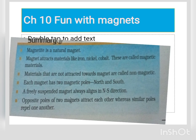You can try an experiment: take a paper, put a coin on it, and move a magnet from the bottom. The coin will move in the direction of the magnet — because a coin is a magnetic material. You can also do this with safety pins. Whatever is attracted toward the magnet is called magnetic material, and whatever is not attracted toward the magnet is called non-magnetic material.